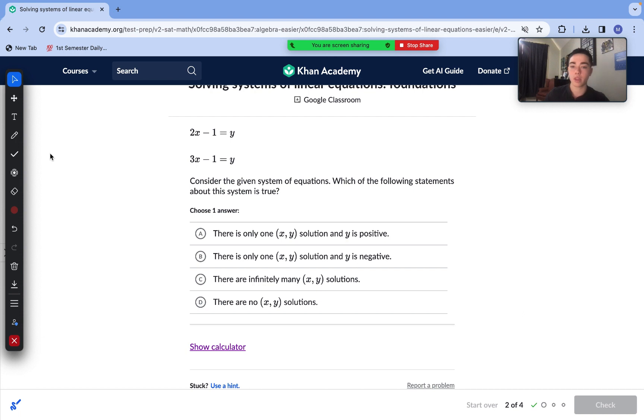0 comma 3 is the correct answer with this one. Let's move on to our next question. Consider the given system of equations which of the following statements is true. So they're talking about our solutions. The best way to do this is to just solve. So let's solve using substitution here. We can see that both of these variables are isolated. That means that we can just substitute in the second equation for one of these variables. Let's say y.